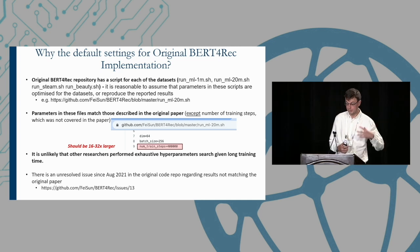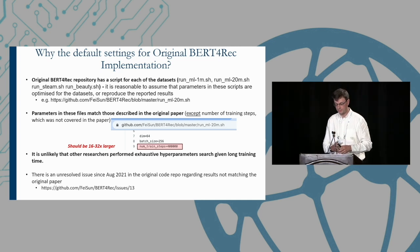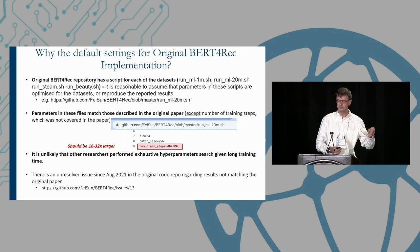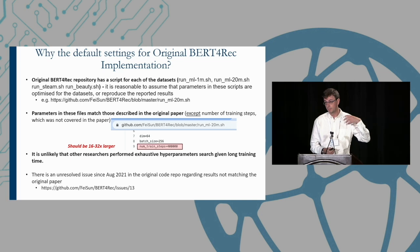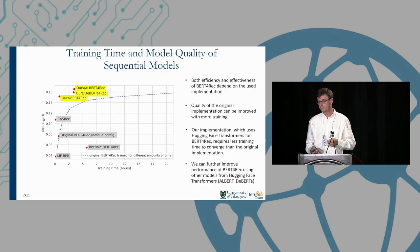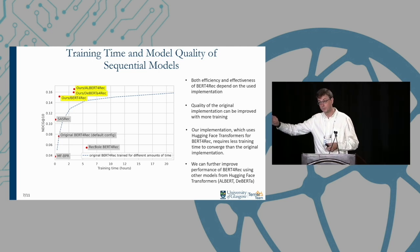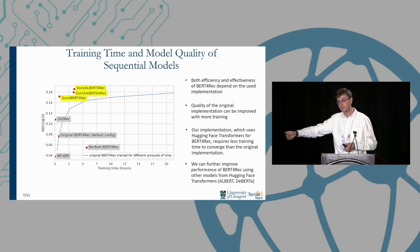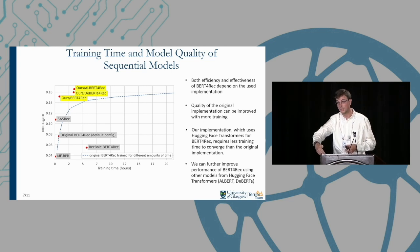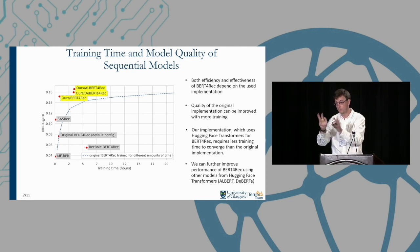Sure. So the first point about the setting: I've put here a pre-prepared slide. The original BERT4REC code did not have any form of early stopping. The implementations we're showing here have early stopping after something like 200 epochs with no improvement on a validation set. So in this case, we are seeing fully converged models after about one hour's training for our BERT4REC, the Hugging Face-based one.